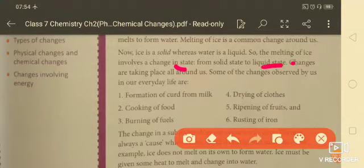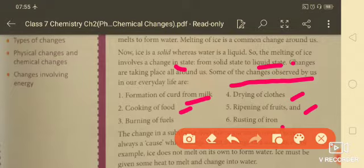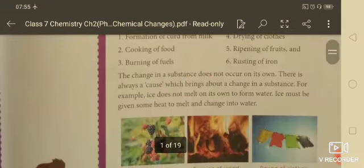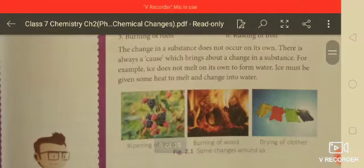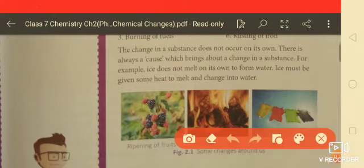Changes are taking place all around us. Some of the changes we observe in our daily life are: formation of curd, cooking of food, drying of clothes, ripening of fruits, and rusting of iron. The changes in substances do not occur on their own. A few external factors are responsible for the changes.